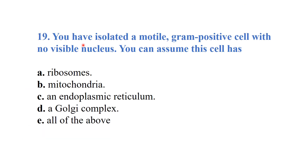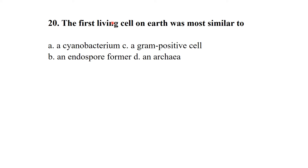You have isolated a motile gram-positive cell with no visible nucleus. You can assume this cell contains ribosomes. The first living cell on Earth was most similar to a prokaryote.